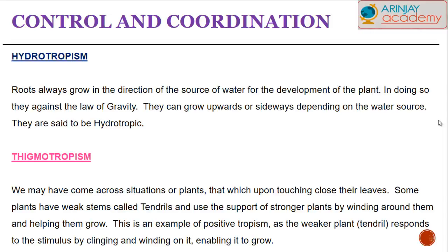Thigmotropism involves a plant's response to touch. We may have come across situations where, when we touch a plant, its leaves automatically shut. Certain plants are weak, like creepers — for example, tendrils — and they have a tendency to grow onto other plants for support by winding up around them. This is an example of positive tropism, as the response of the weaker plant to the stimulus is to cling and wind around the stronger plant, enabling it to grow towards sunlight.